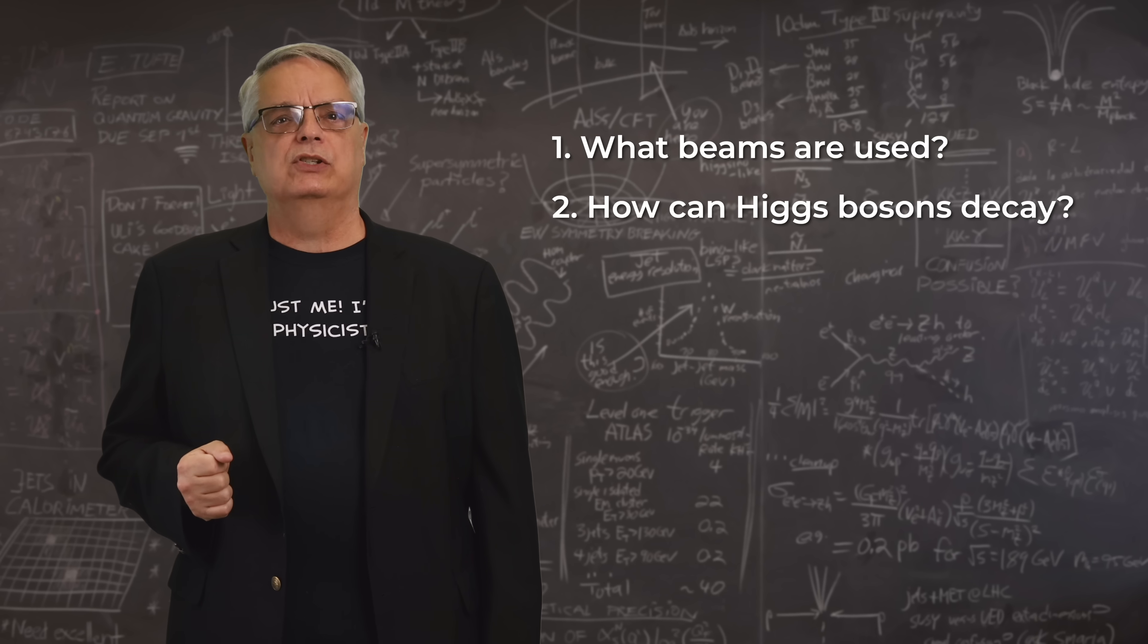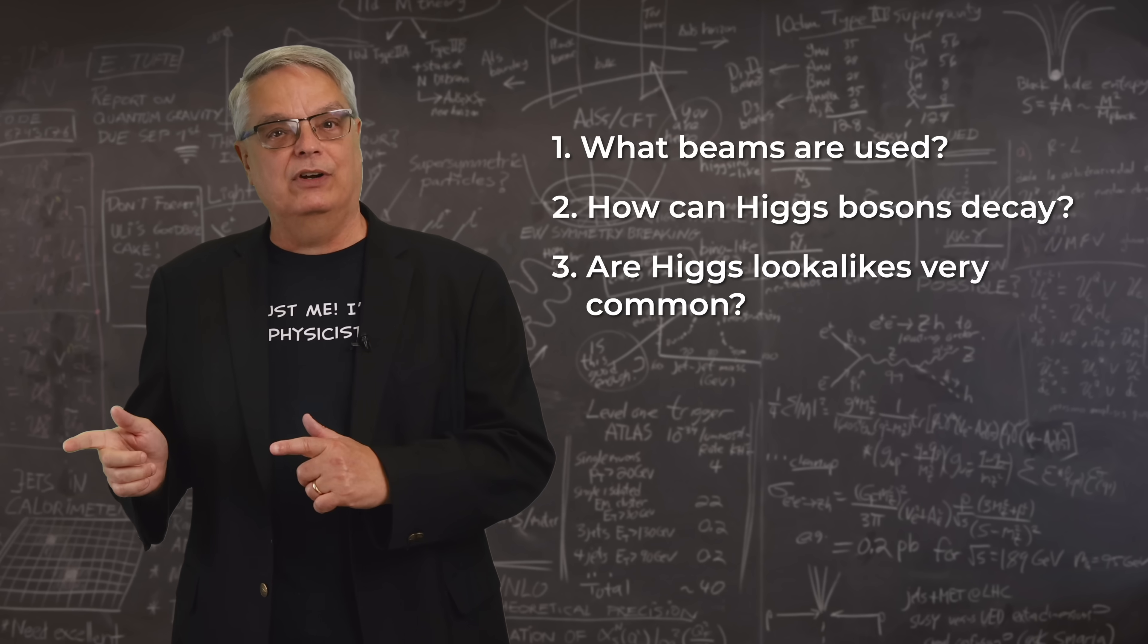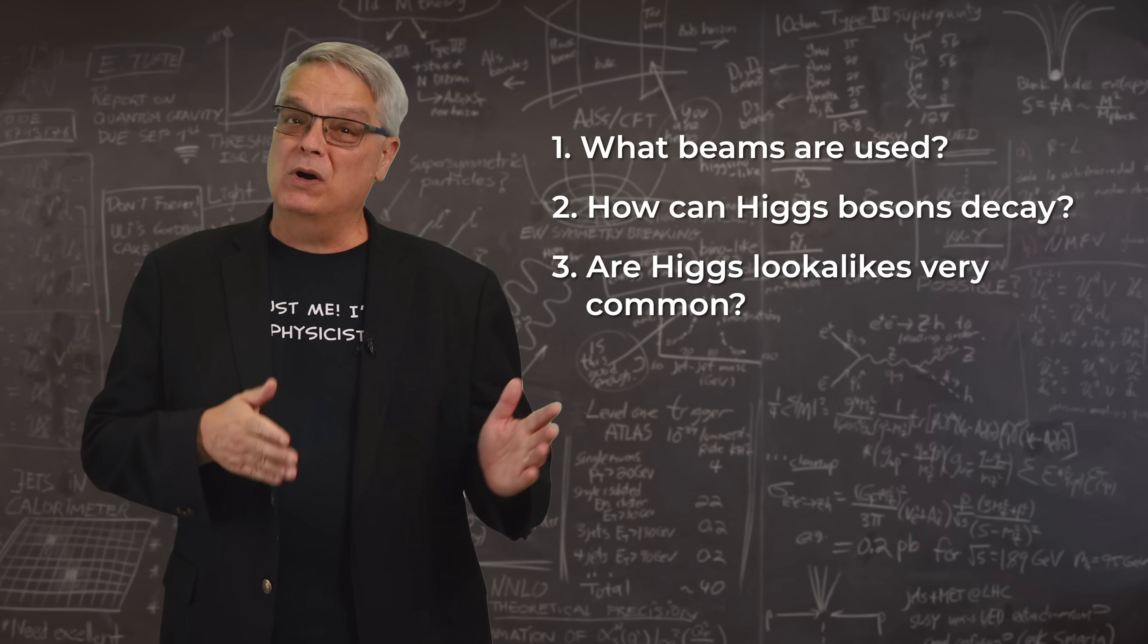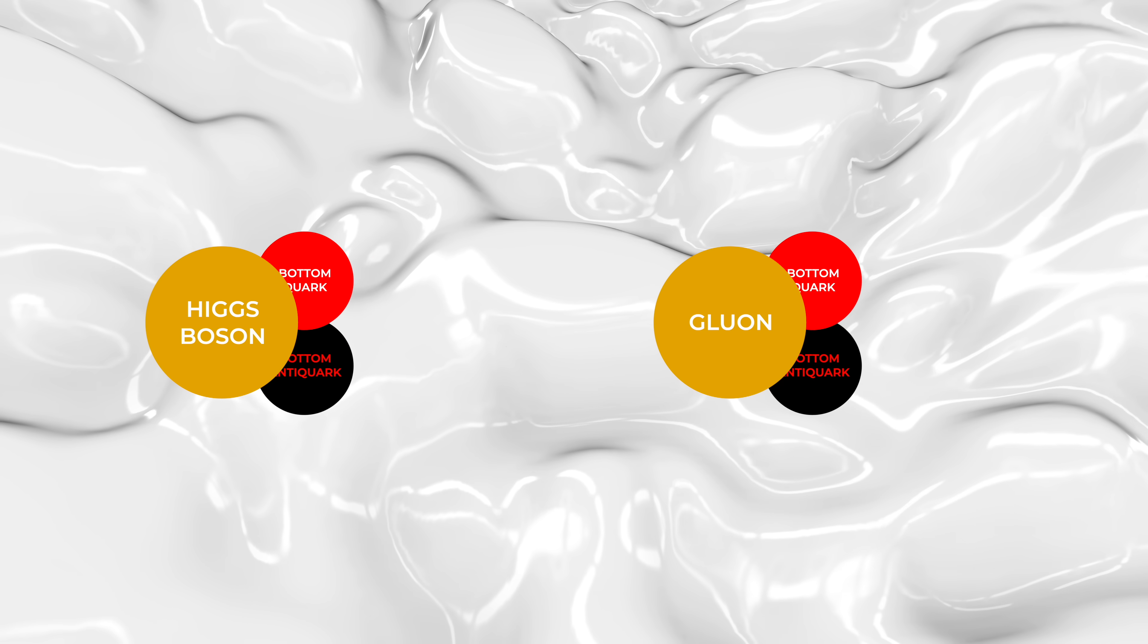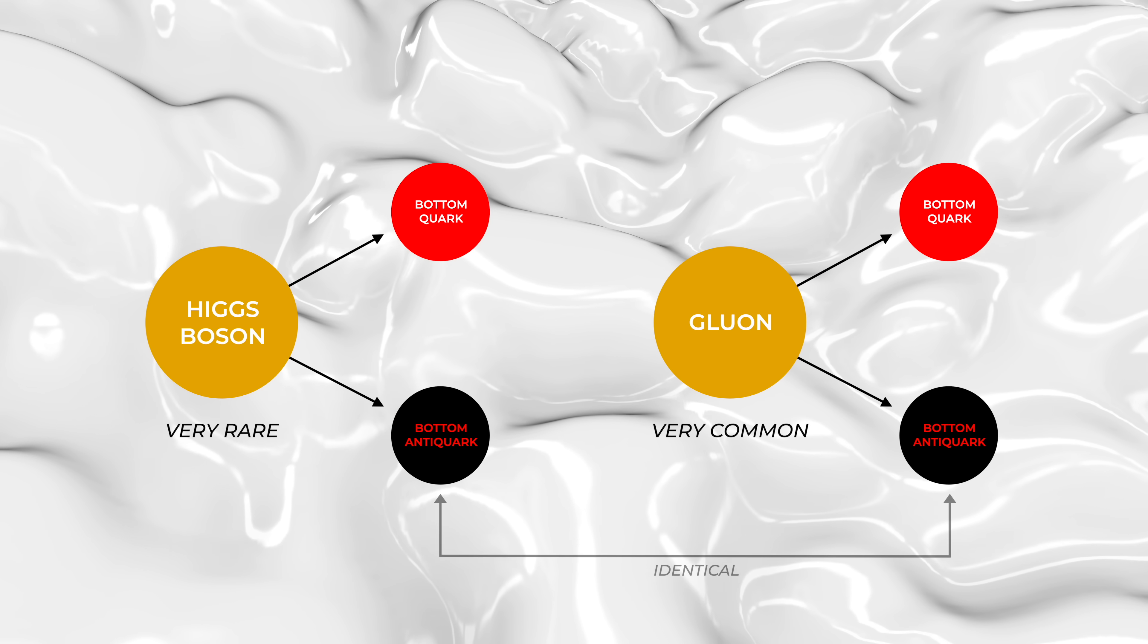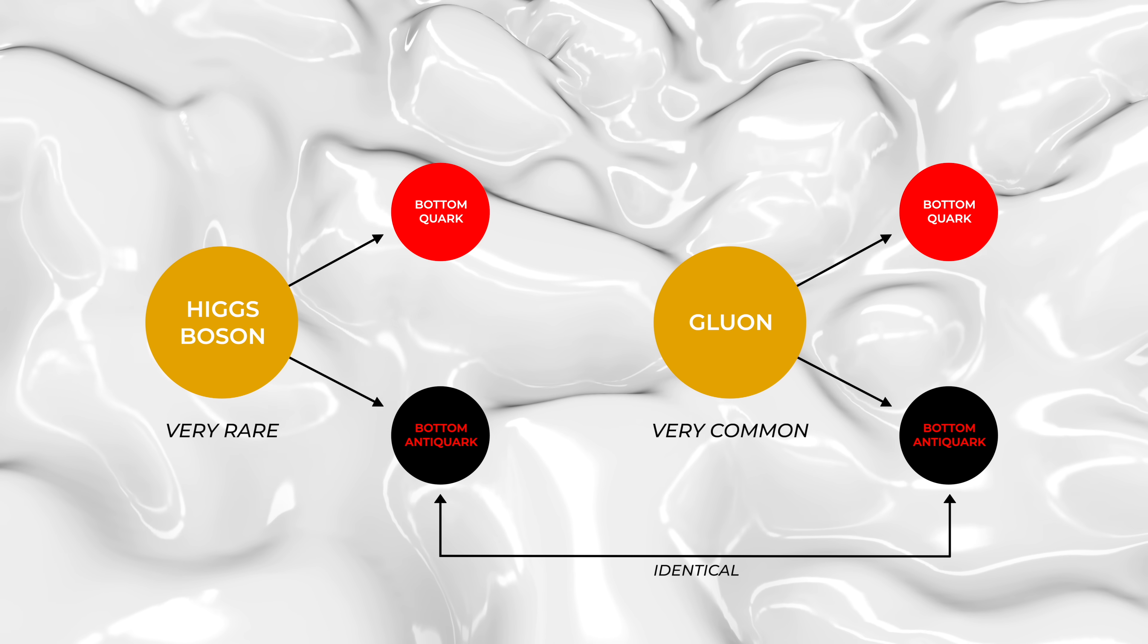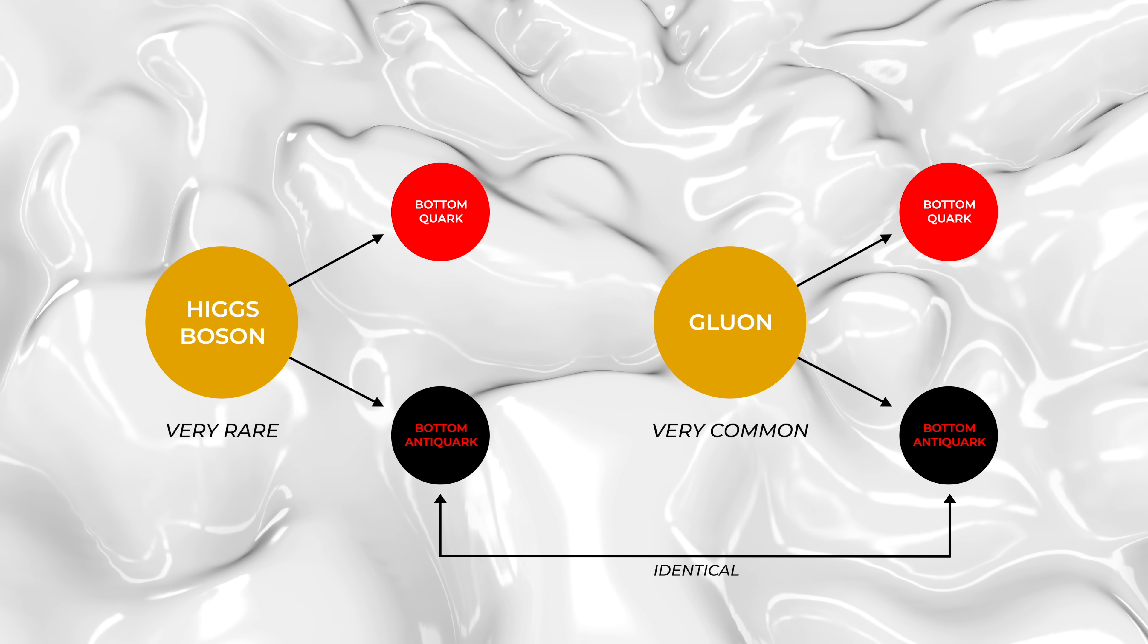A third consideration is whether the manner in which the Higgs boson decays is easy to identify or whether it looks like more pedestrian collisions. After all, in particle physics collisions, all sorts of things happen. If the particular type of decay you're looking for is produced far more often via other collisions, the Higgs signal could be hidden like a whisper at a rock concert.